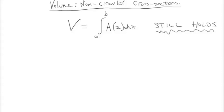Hey, so this is Joe, and this is the third part of the fifth chapter of Stewart's Calculus, and we're going to be talking about getting volume of a curve using non-circular cross-sections.